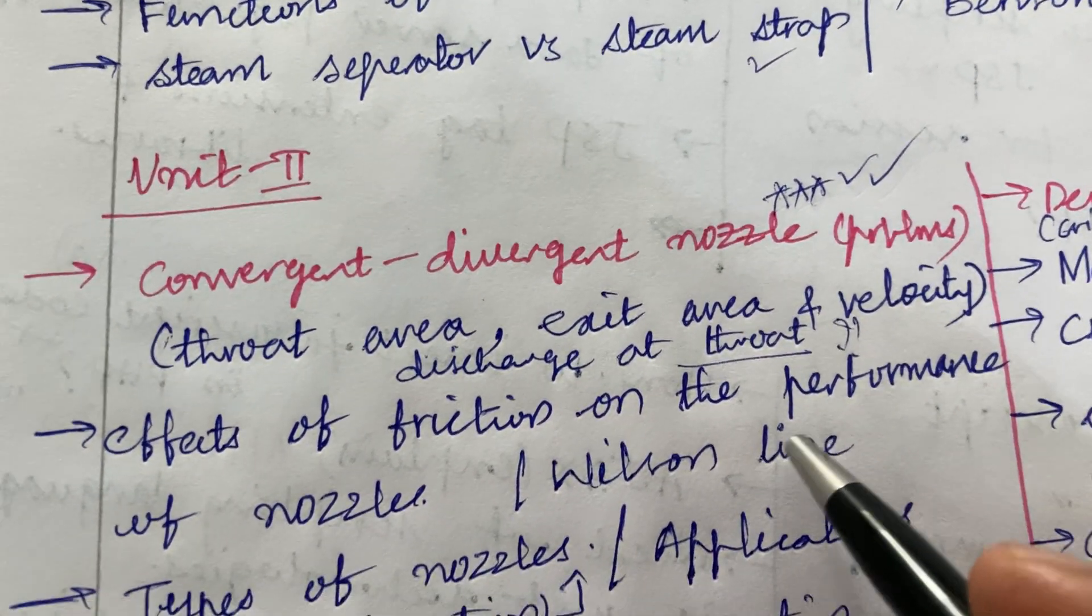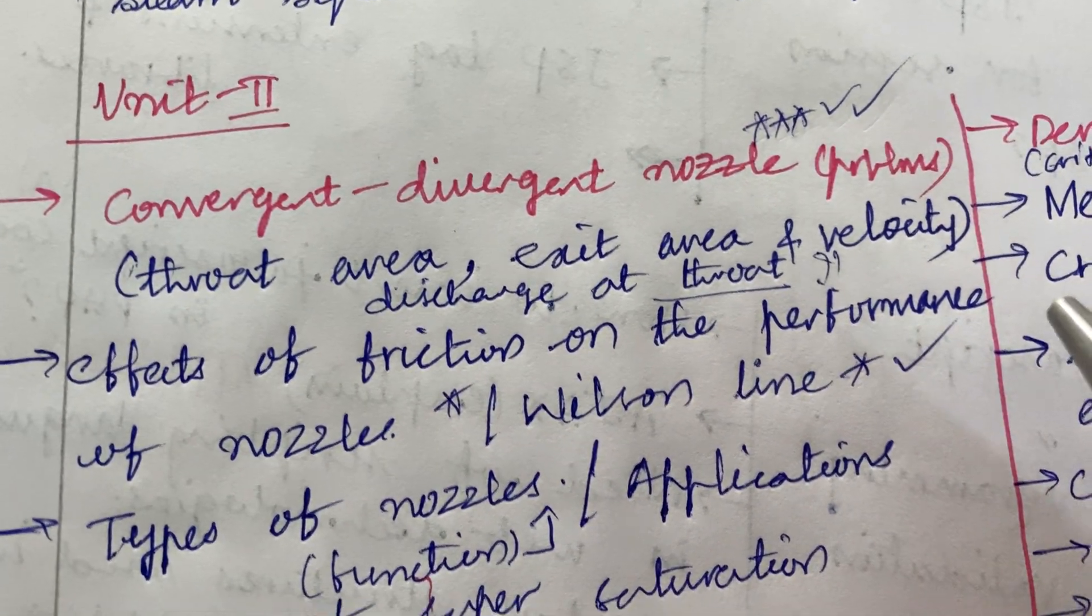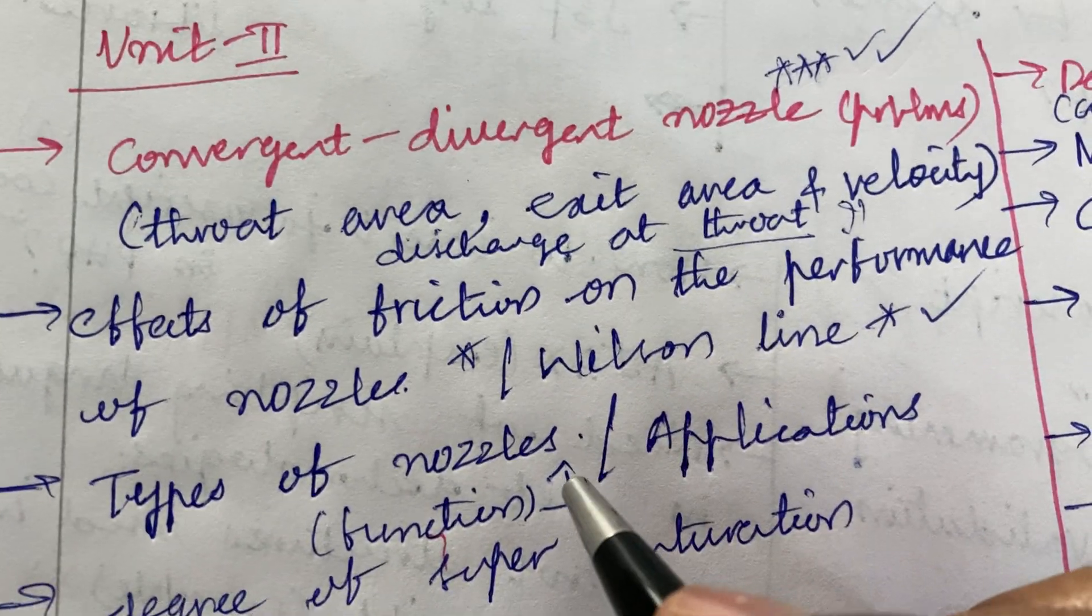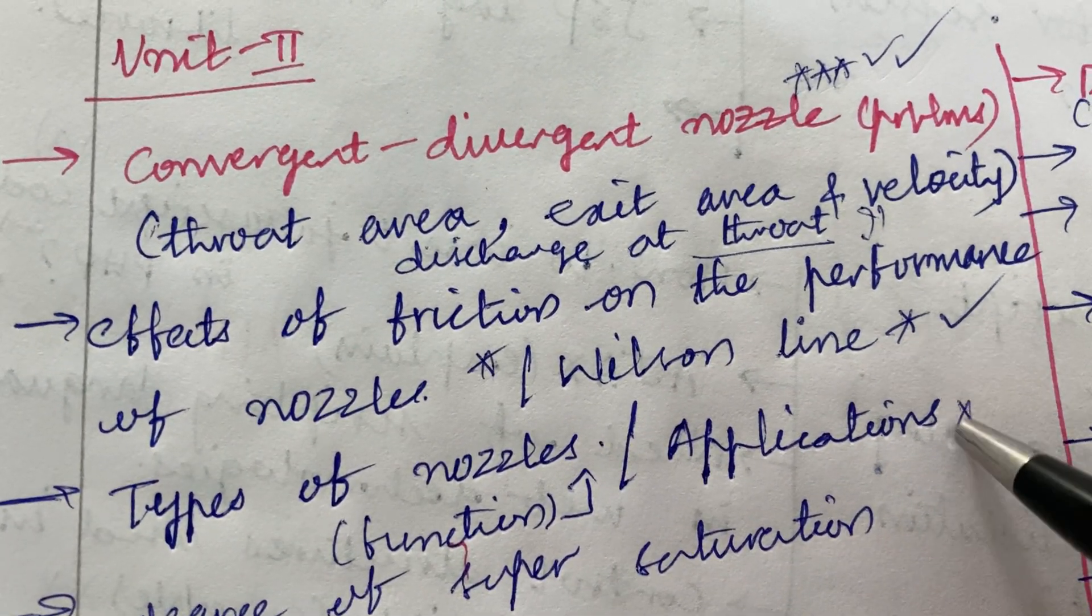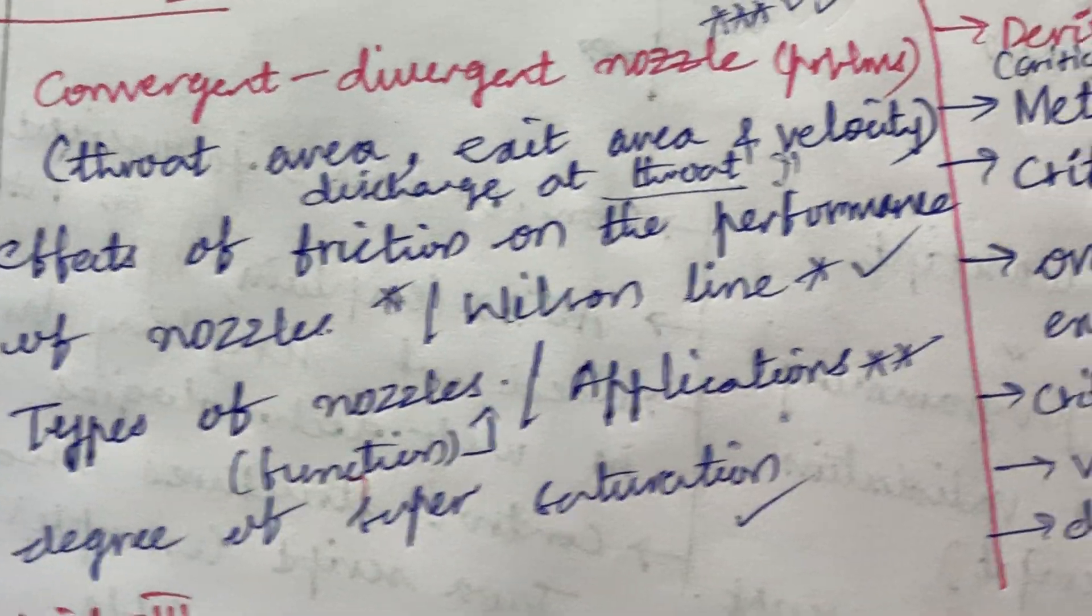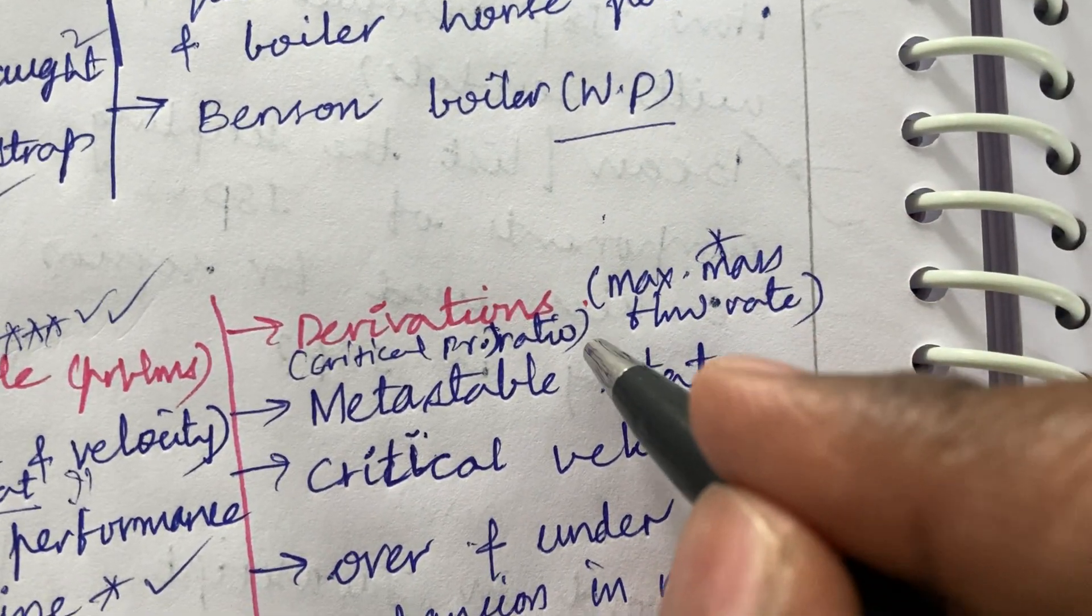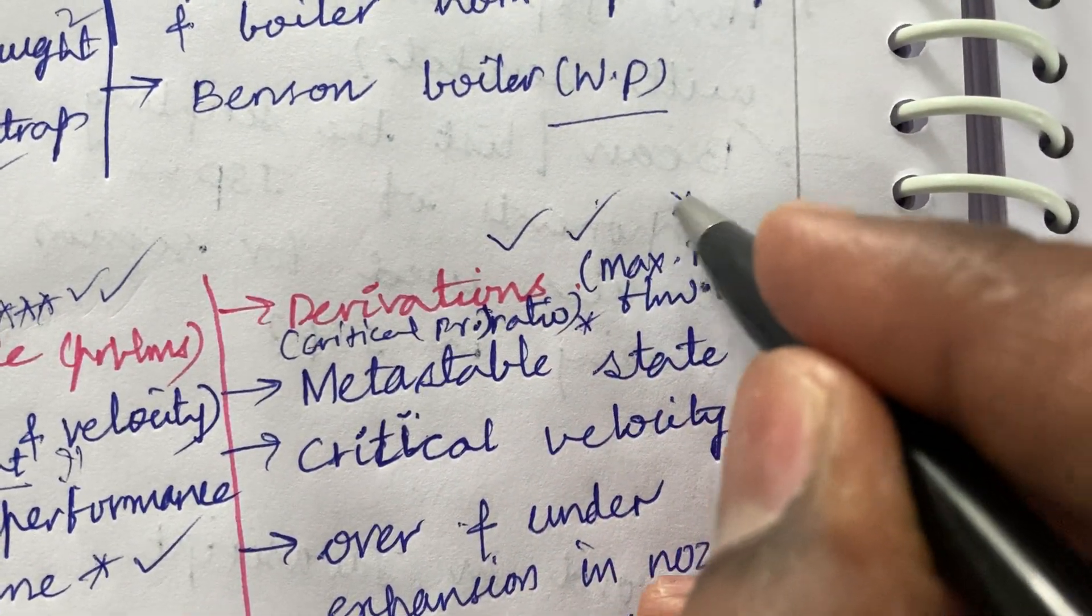Effects of friction on the performance of nozzle is said to be a short question. Wilson line - define the term and explain - a short question. Types of nozzles and the functions and applications may be a long question. Degree of supersaturation is a short question. The expressions and certain derivations related to maximum mass flow rate or the critical pressure ratio is said to be a top most question.